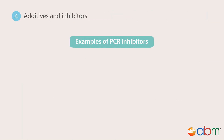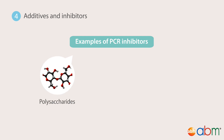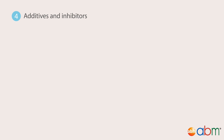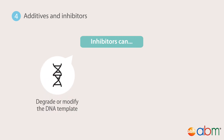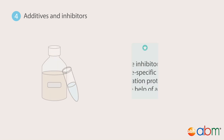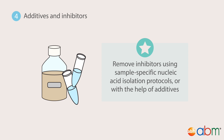Many naturally occurring substances such as polysaccharides, tannic acid, and EDTA can also inhibit PCR. Some inhibitors may degrade or modify the DNA template, while others can disturb the annealing of primers to DNA or alter the DNA polymerase activity. Inhibitors can be removed with sample-specific nucleic acid isolation protocols, or sometimes the use of additives can help in reducing the inhibition.